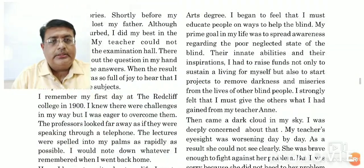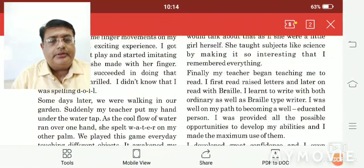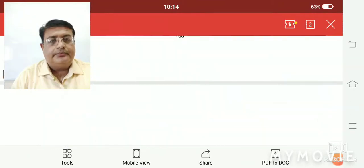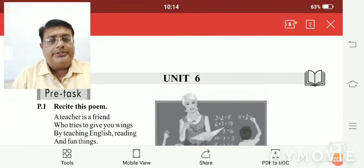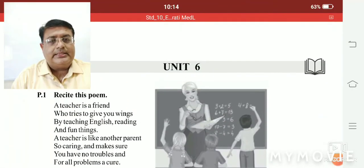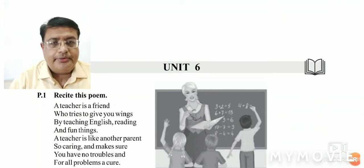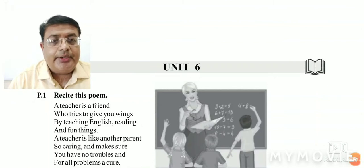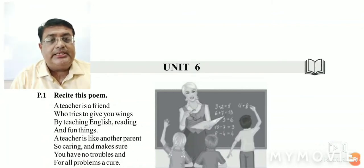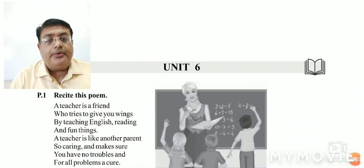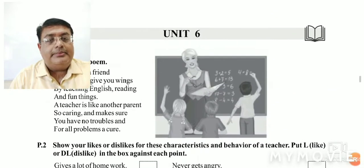Now I will start our lesson. Unit 6, Pre-task: Recite this poem. First of all they have given a short poem: 'A teacher is a friend who tries to give you wings by teaching English, reading and fun things. Our teacher is like another parent.'